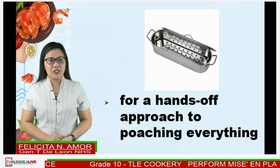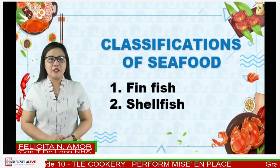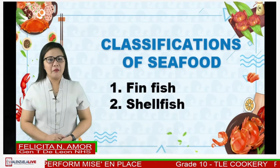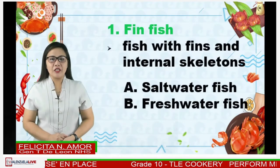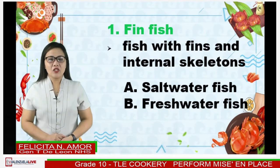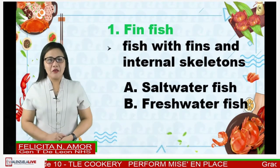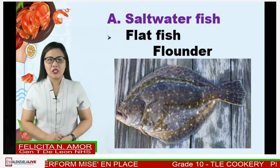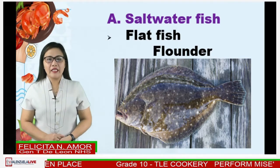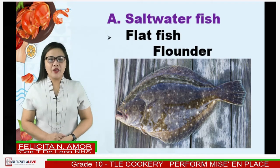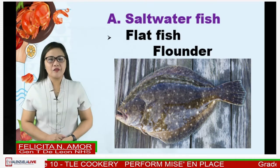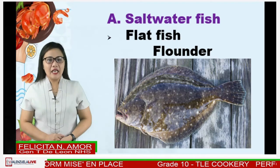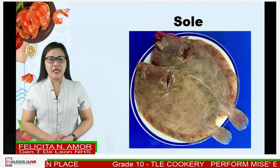Different species of seafood are adapted from different habitats. Here are the classifications of seafood: number one, fin fish, and number two, shellfish. Fin fish are fish with fins and internal skeletons. Letter A: saltwater fish. Letter B: freshwater fish. Saltwater fish, also called marine fish, are fish that live in ocean water. They can swim and live alone or in a large group called a school. There are two kinds: first, flat fish — they are flat in shape, both eyes on one side. Examples are flounder and sole.